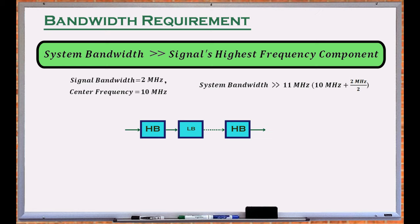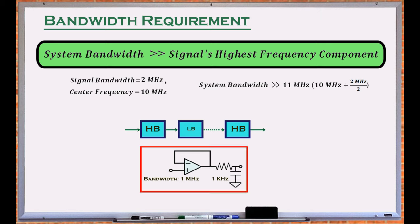The bandwidth of a system depends on several factors and is generally limited by the component with the smallest bandwidth. For example, placing a 1 KHz simple RC filter in series with the output of a 1 MHz amplifier reduces the signal bandwidth through the circuit to about 1 KHz.